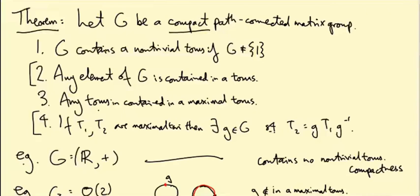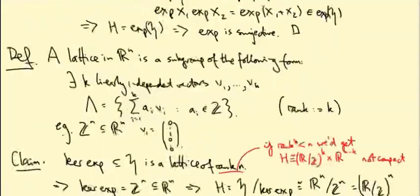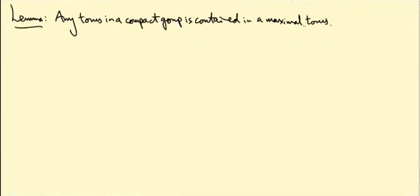What we now need to show is that any torus is contained in a maximal torus. Let me get a new page. Okay, so this is what we're trying to prove now: any torus in a compact group is contained in a maximal torus.